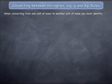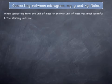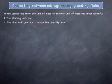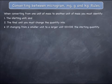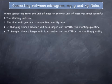When converting from one unit of mass to another unit of mass, you must identify the starting unit and the final unit you must change a quantity into. The rules are: if you are changing from a smaller unit to a larger unit, you must divide the starting quantity. Alternatively, if you are changing from a larger unit to a smaller unit, you must multiply the starting quantity.